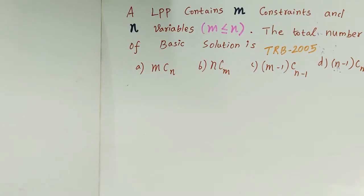In one LPP, there are m constraints and n variables. The number of variables is greater compared to the number of constraints. For example, our LPP may have 3 variables which is more than the number of constraints.